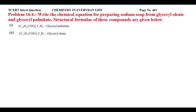This is an NCERT in-text question from Chemistry in Everyday Life, problem number 16.4. The question asks: write the chemical equation for preparing sodium soap from glyceryl oleate and glyceryl palmitate, with their structural formulas given. We have to prepare sodium soap from these two compounds — glyceryl palmitate and glyceryl oleate.